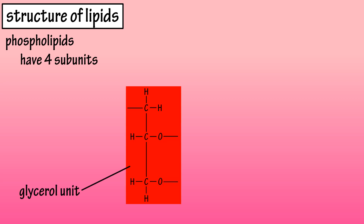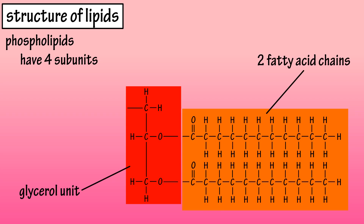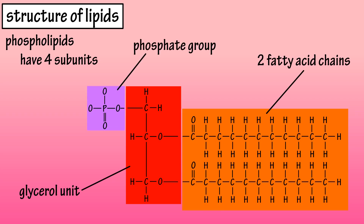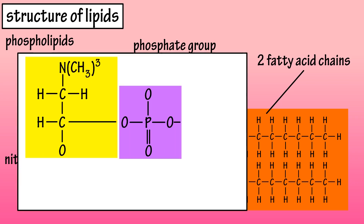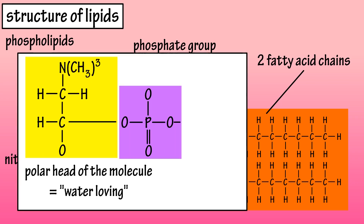Phospholipids are similar in structure to triglycerides in that they have four subunits. They are composed of a glycerol unit, two fatty acid chains, a phosphate group, and a nitrogen-containing group. The phosphate and nitrogen group extend in the opposite direction of the fatty acids. This end, or the head of the molecule, is actually polar, so it's water-soluble. Hydrophilic, meaning water-loving, is the term often used to describe the head portion of a phospholipid molecule.